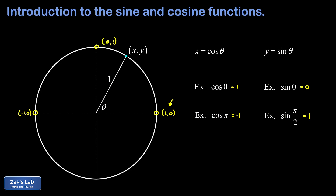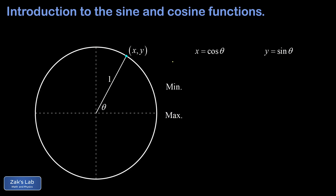We can always get the sine and cosine of angles sitting at the cardinal directions just by going back to the definition. The cosine function oscillates between a maximum value of positive one, which happens at an angle of zero, and a minimum value of negative one, which happens at an angle of π. So the minimum value of cosine is −1 occurring at π, and the maximum is +1 occurring at zero.